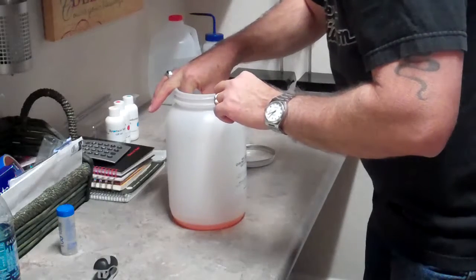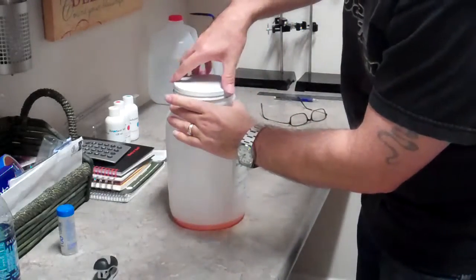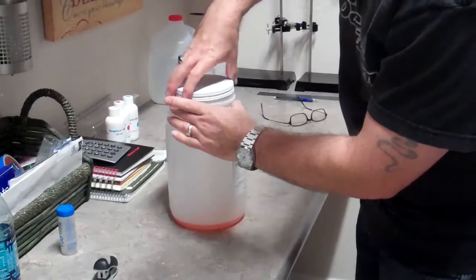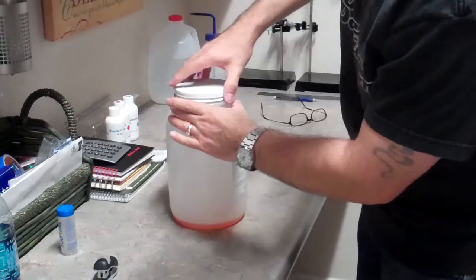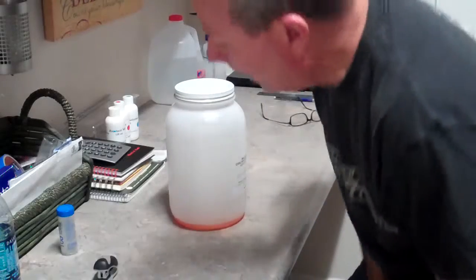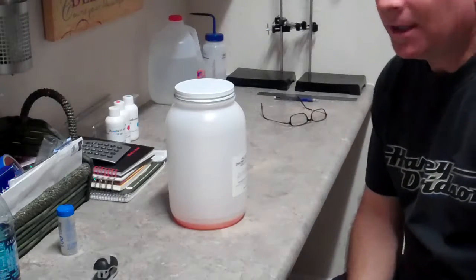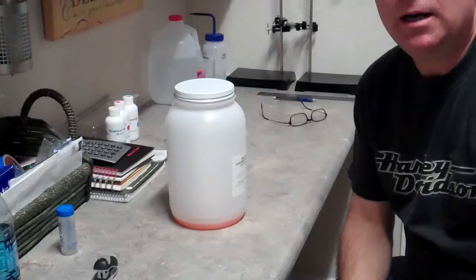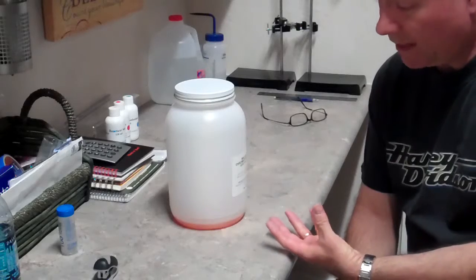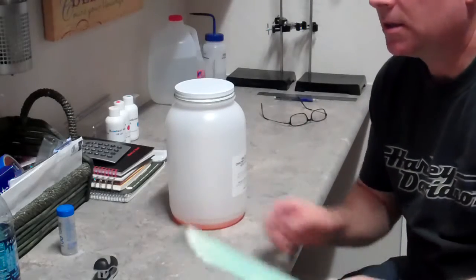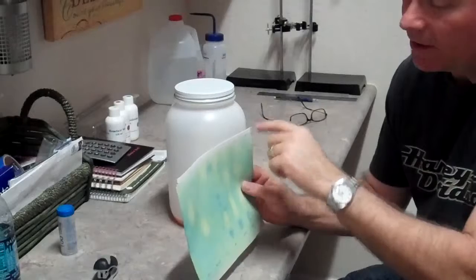We're going to very gently set this down into the center of our gallon container. We're going to put the lid on because we want to contain all the vapors inside, because that's part of how this works. We're going to let this set for three to five hours approximately. You can let it set overnight; it's not on any time thing.